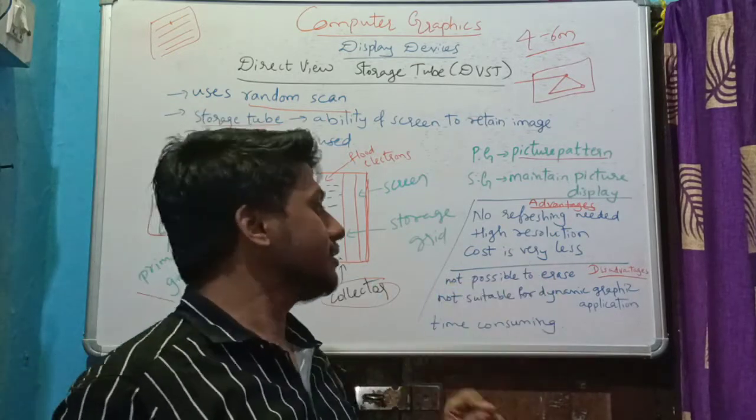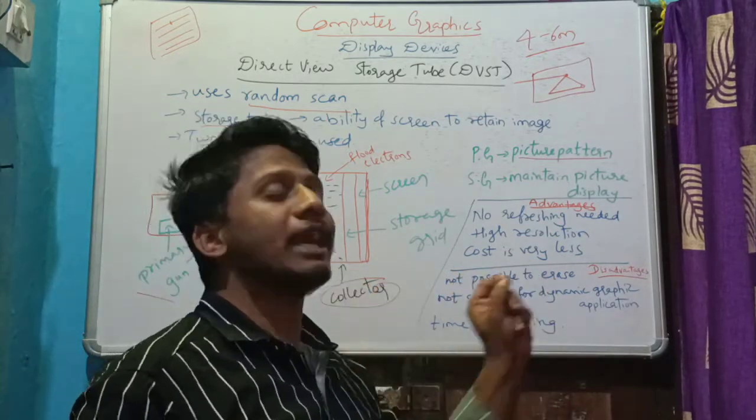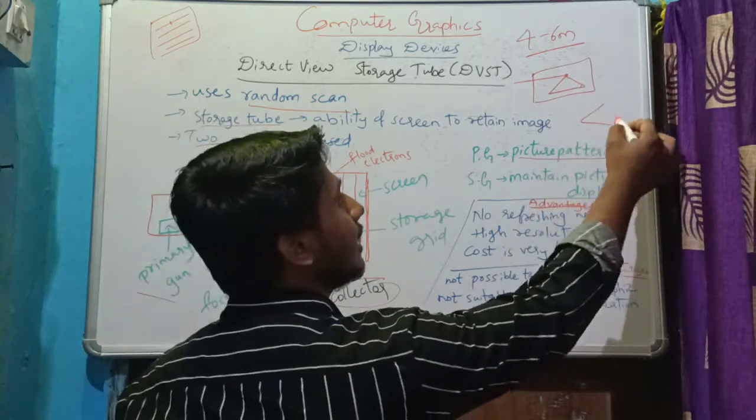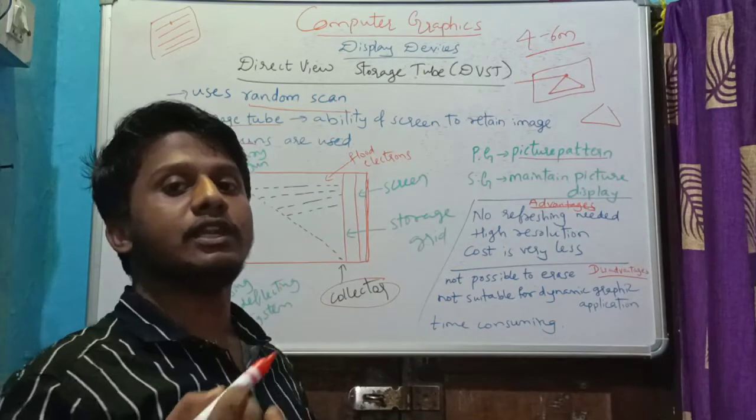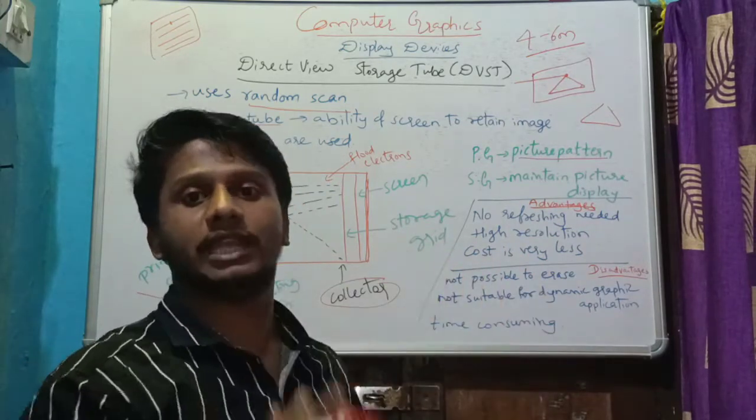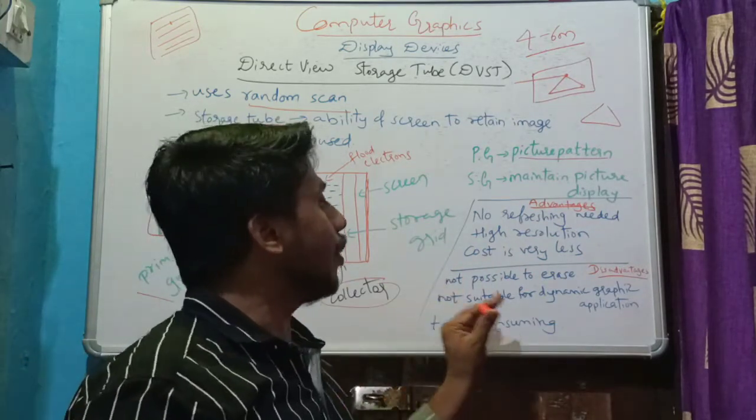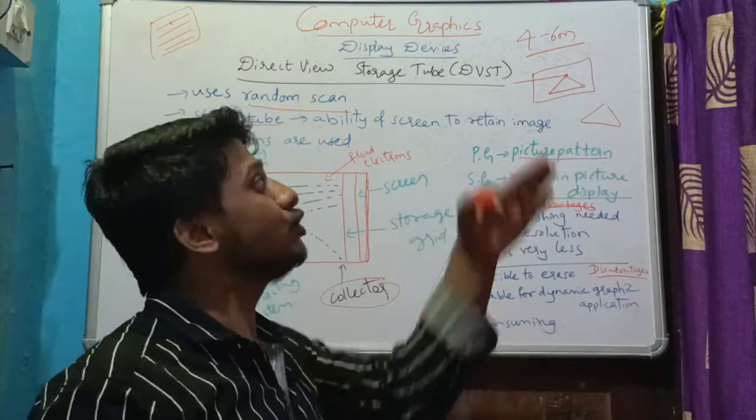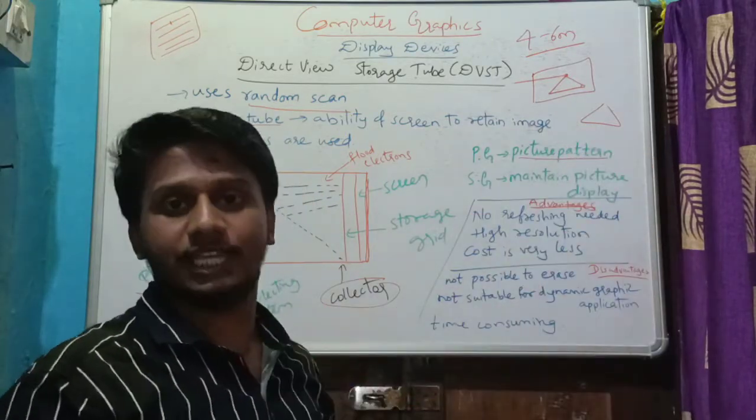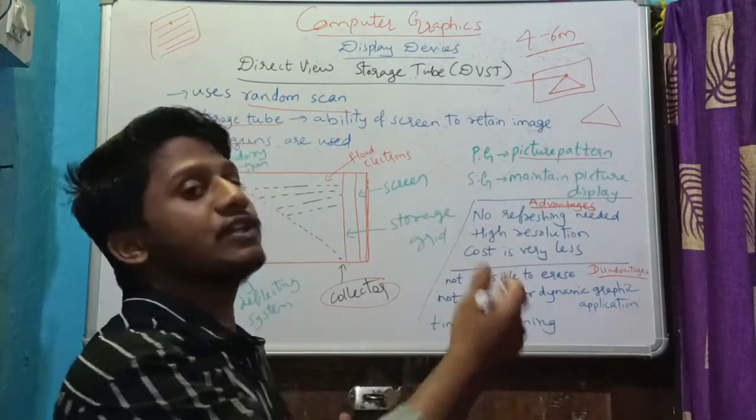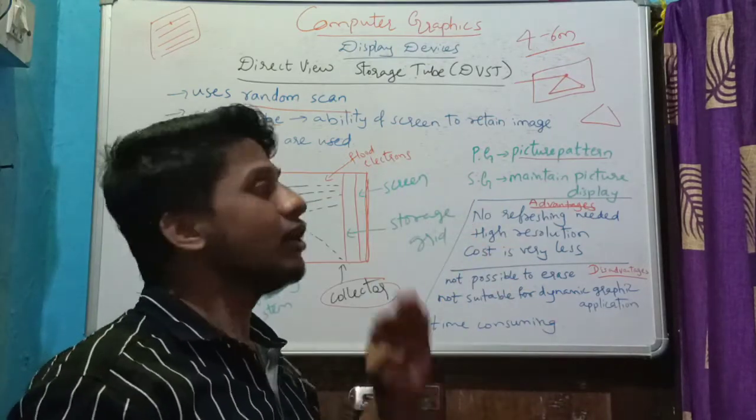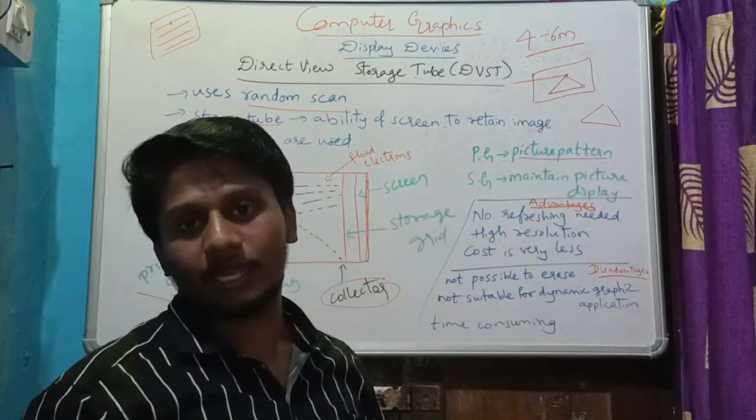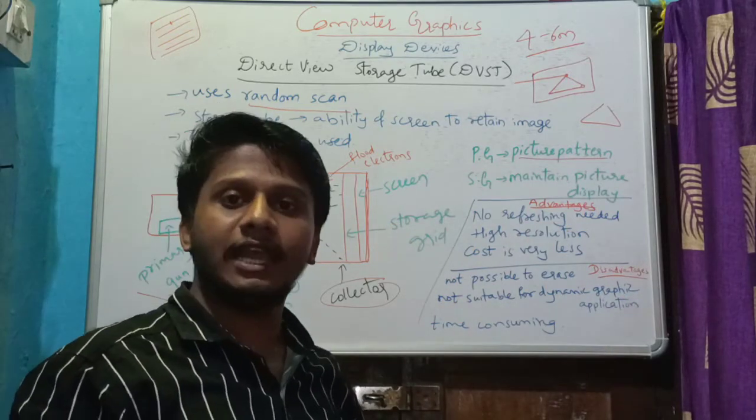Disadvantages - not possible to erase the image. Say you have drawn a triangle, it is very difficult to erase that image and draw something else. So it is not suitable for dynamic graphics. Dynamic means you need changes, but to change here it is difficult because the picture definition will be stored. To erase it needs some time, that's why it is time consuming.